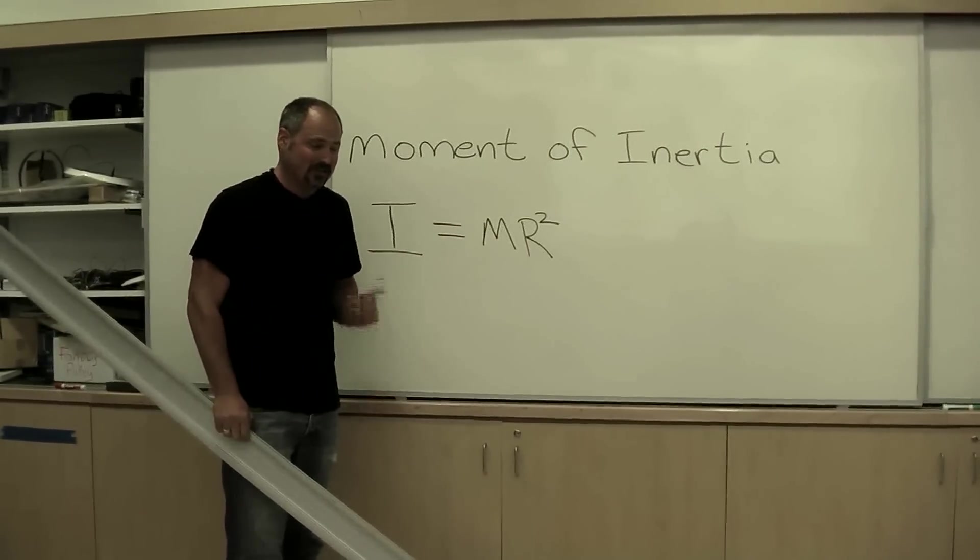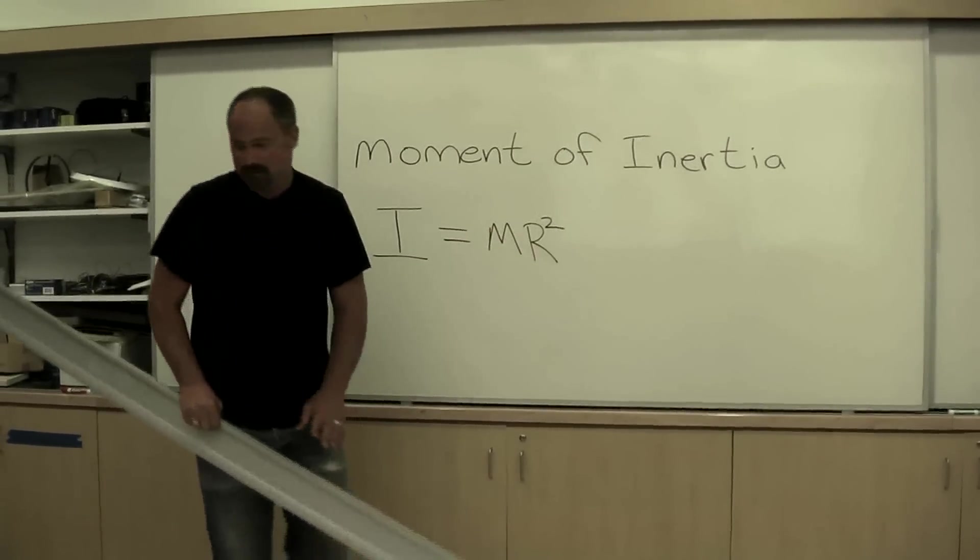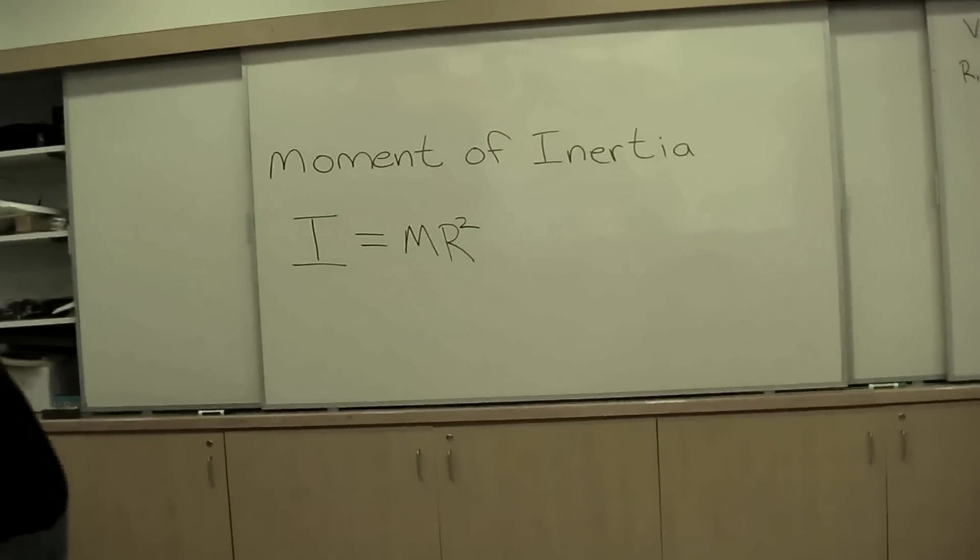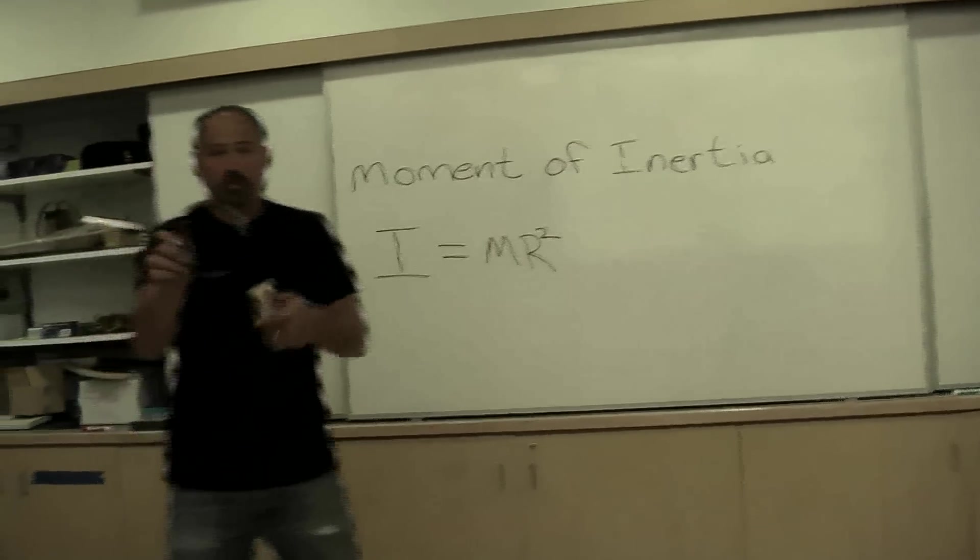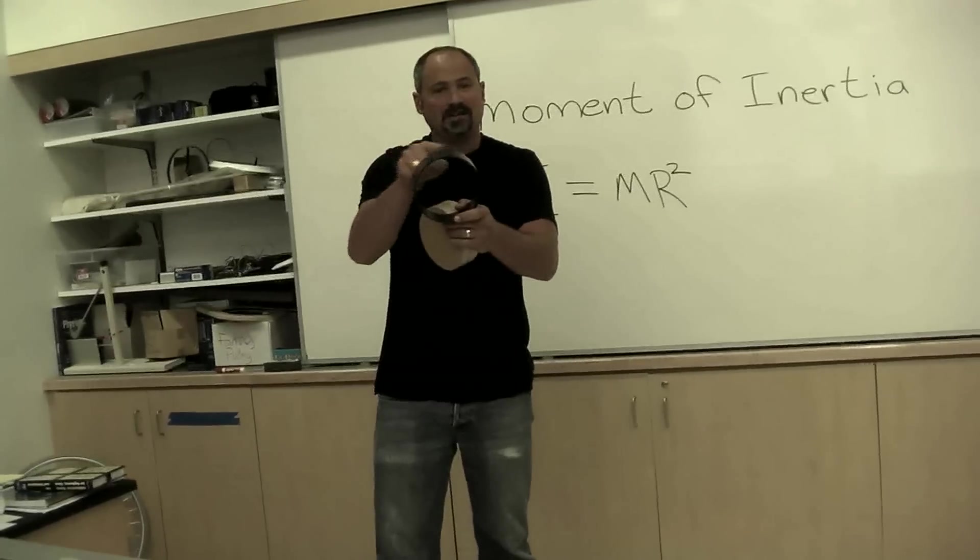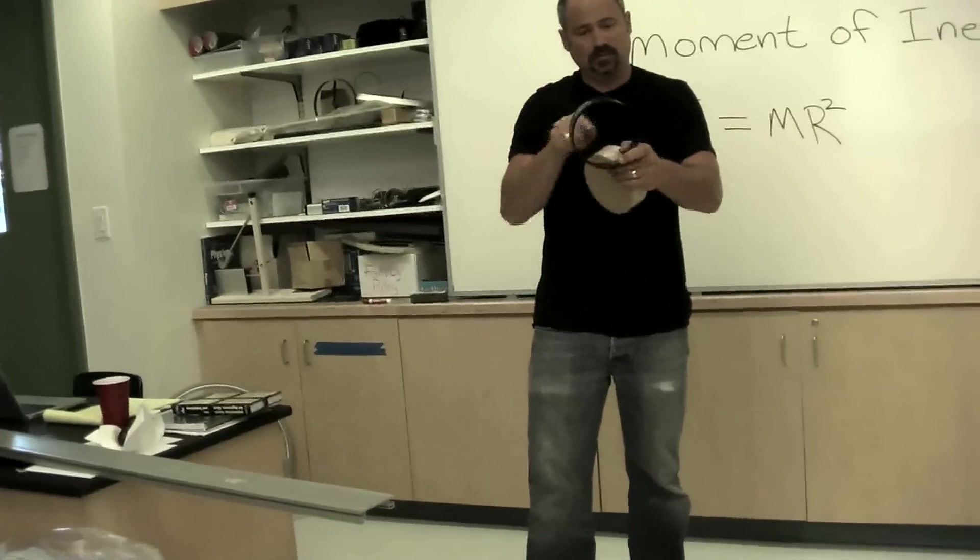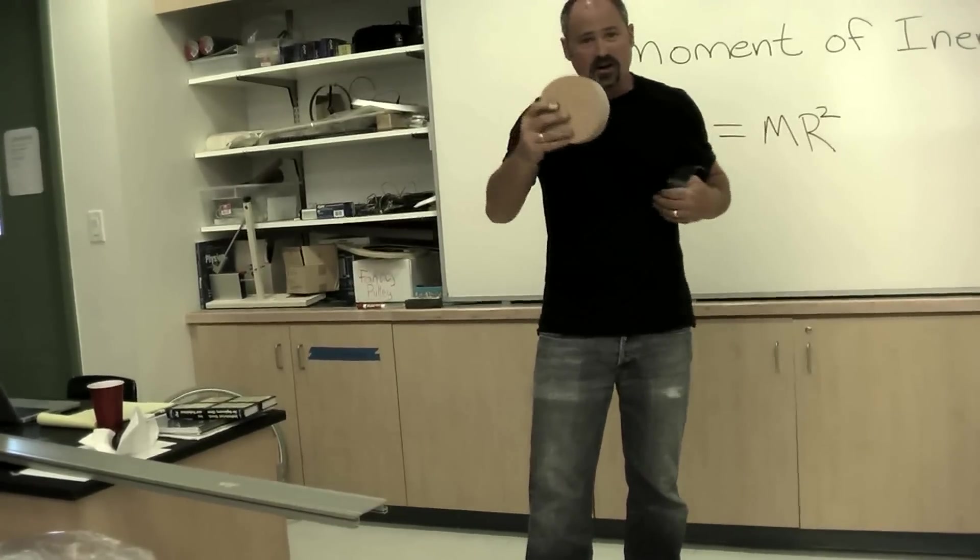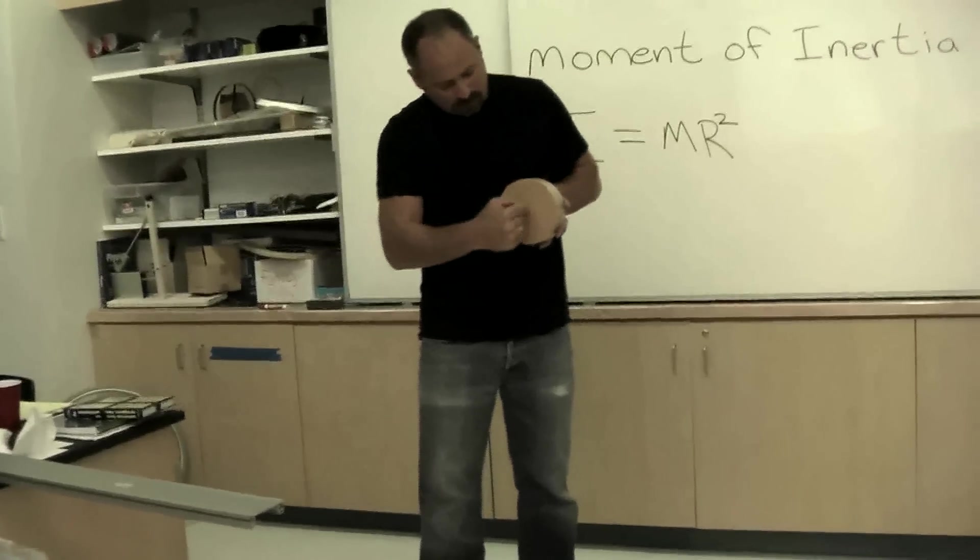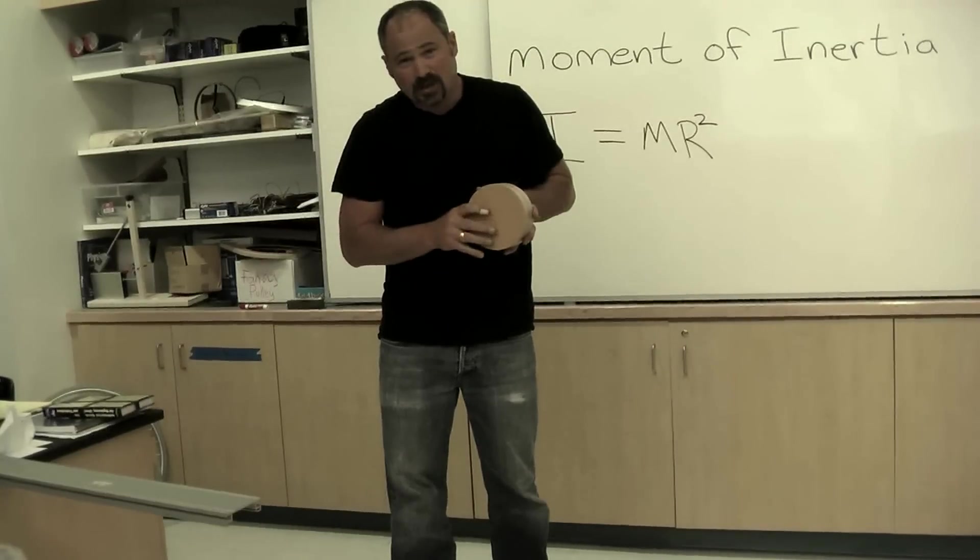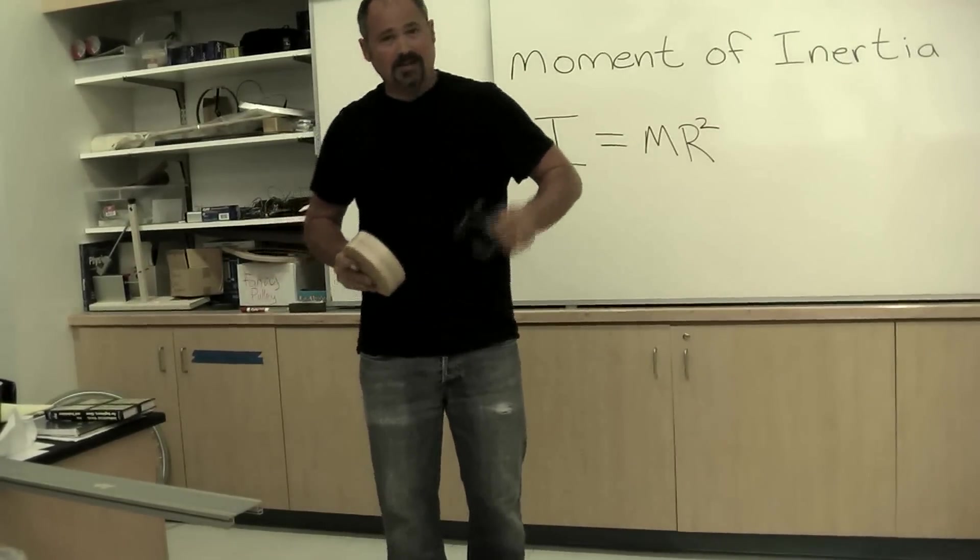Let's take another example. I have here two objects. One is a hoop, so all of the mass is a distance R from the rotation axis, which would be right through the middle here. I have a solid disk; the mass is evenly distributed.